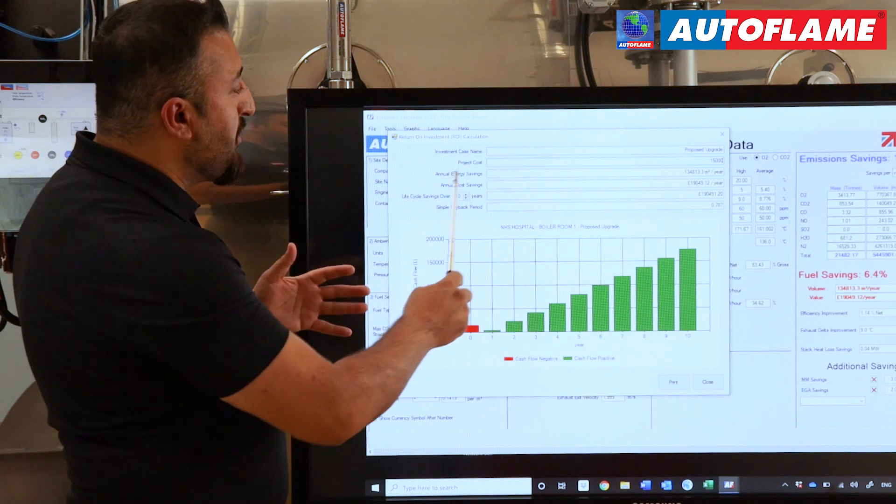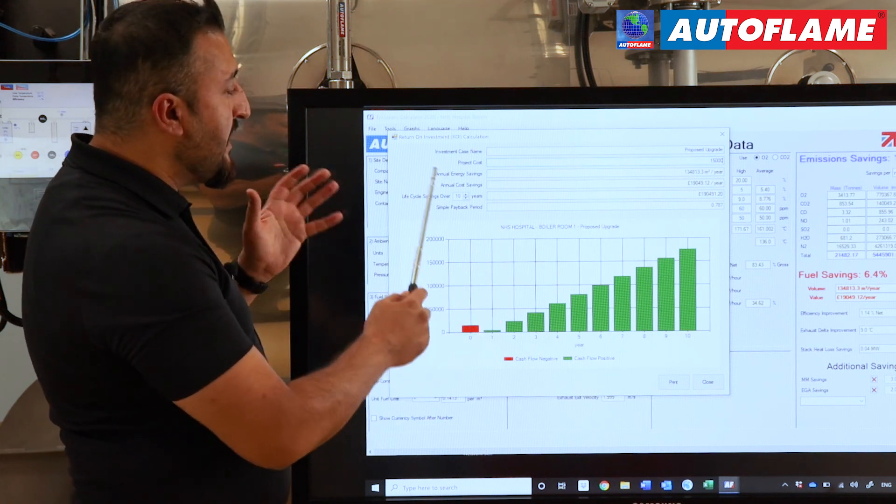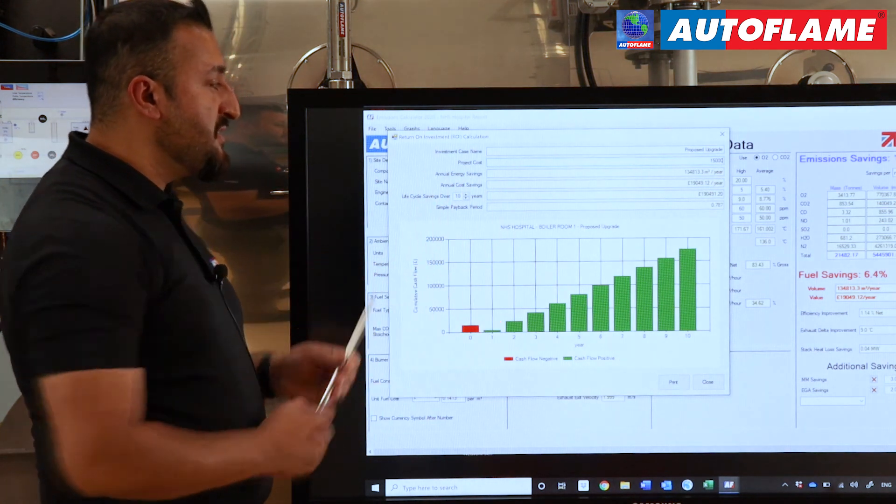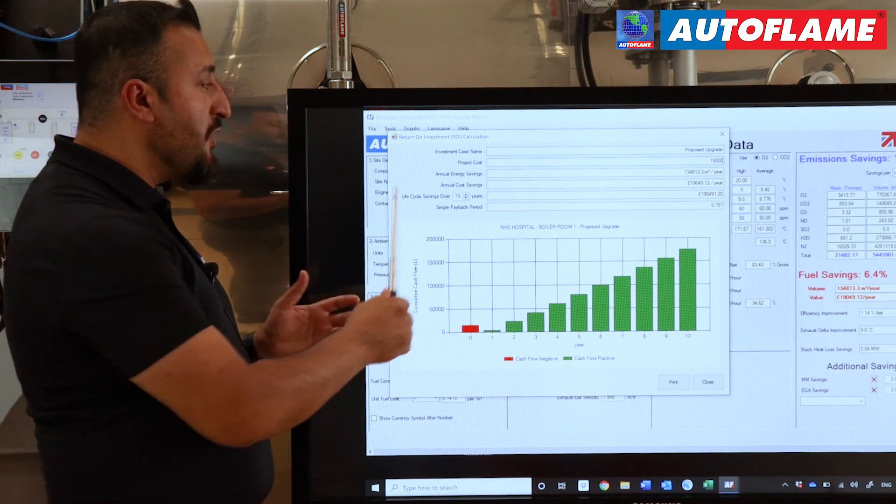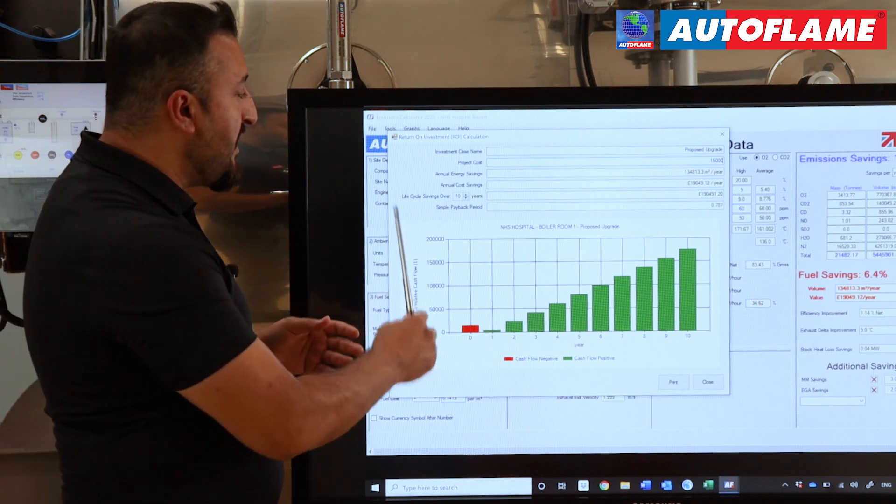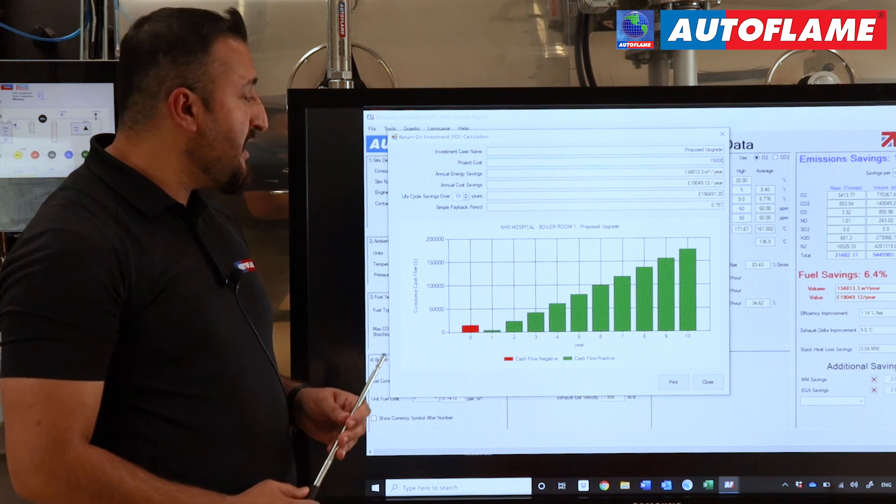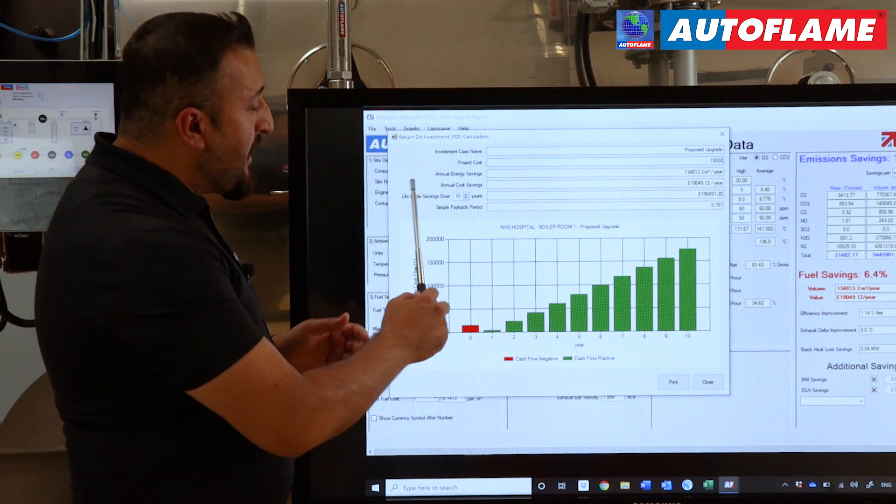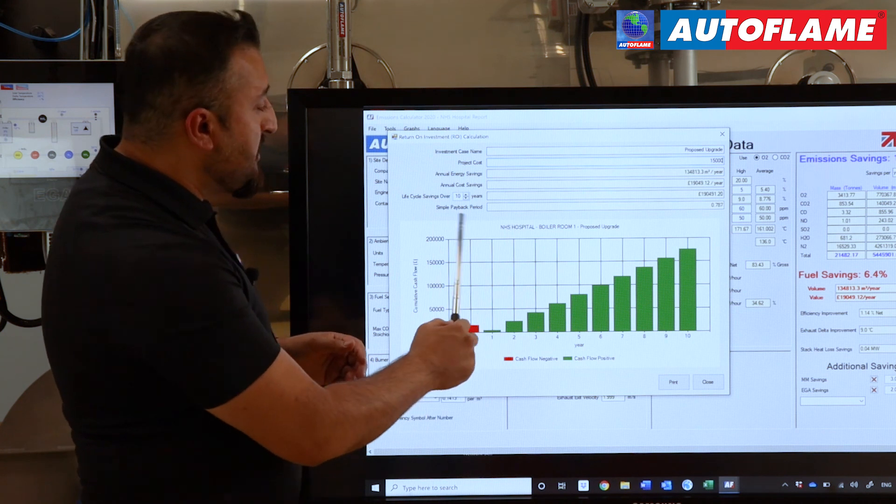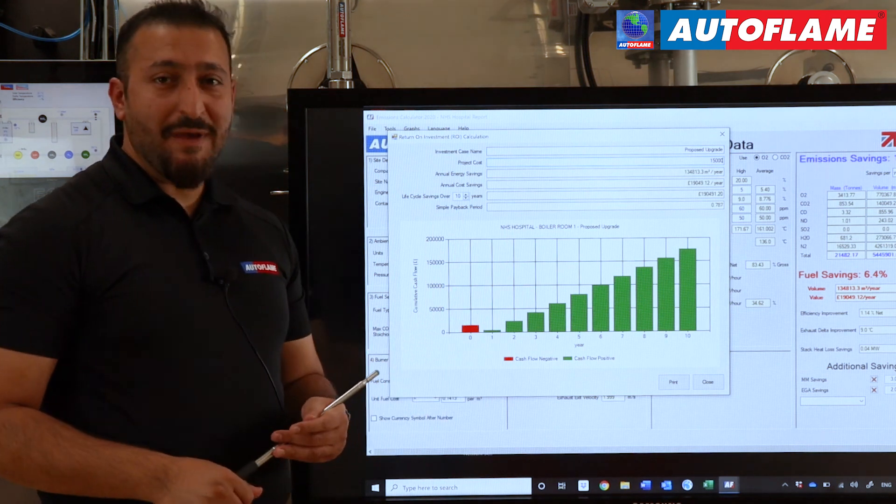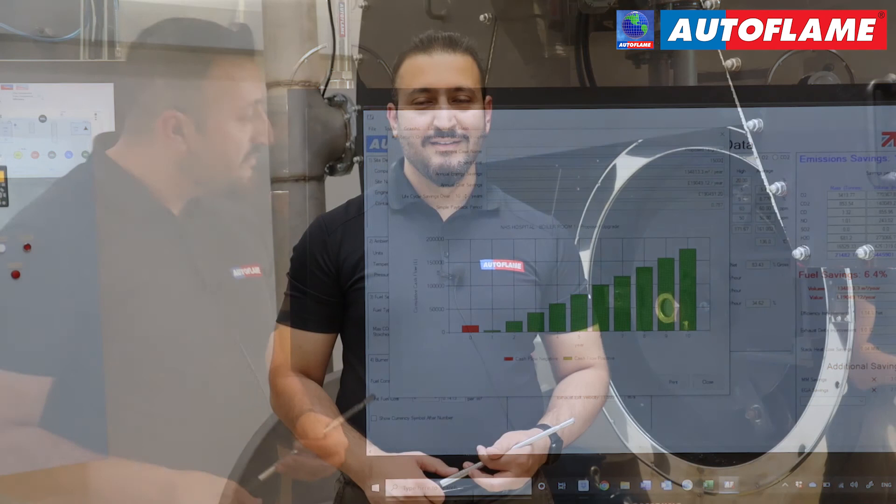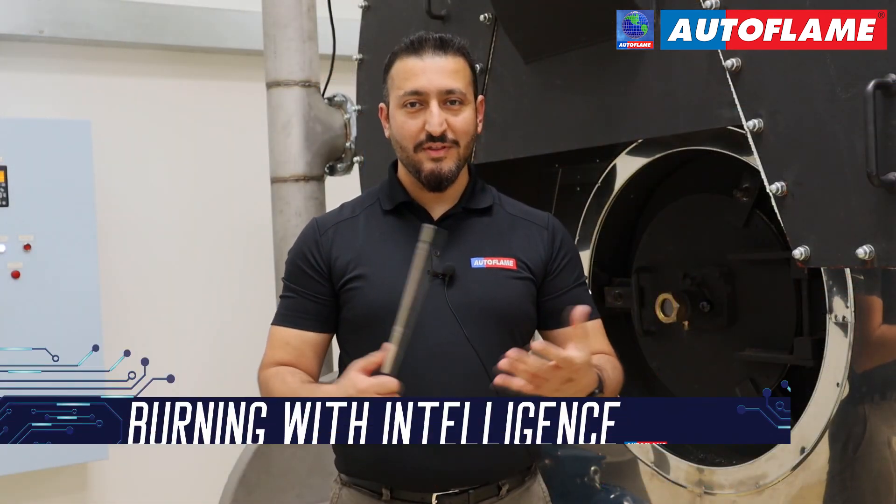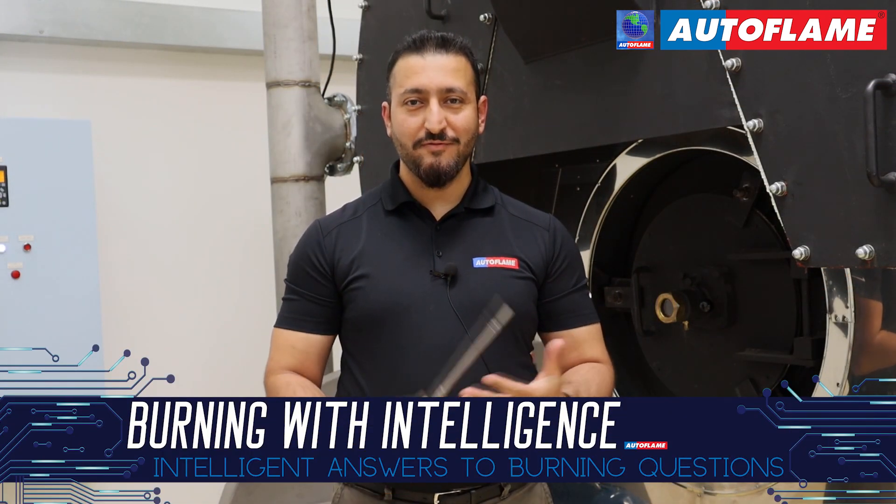Once we put in the project cost, it's taken into account our annual energy savings and also the cost savings. This is life cycle savings over a 10 year period. And based on the information we put in, simple payback period is about 0.8 years. Thanks for your time. We'll see you on the next video. Stay tuned for Burning with Intelligence.